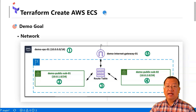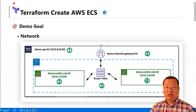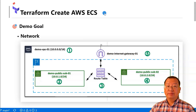Third, isolation and security. Creating a dedicated VPC for your infrastructure enables better isolation and security measures. Lastly, portability and reproducibility. Terraform provides a consistent and reproducible infrastructure provisioning process. By defining your VPC and related resources in Terraform code, you can easily replicate the infrastructure setup across different AWS accounts and regions.